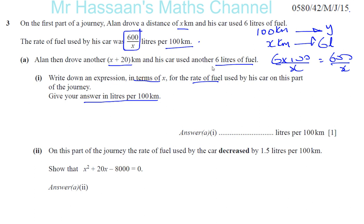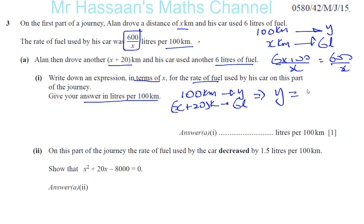Now I'm going to apply the same principle to the second part. I want to find how much fuel he uses in 100 kilometers, knowing he drove X plus 20 kilometers and used 6 liters of fuel. So Y equals 6 times 100 over (X plus 20), which gives 600 over (X plus 20). That's the rate of fuel per 100 kilometers for the second part of the journey.